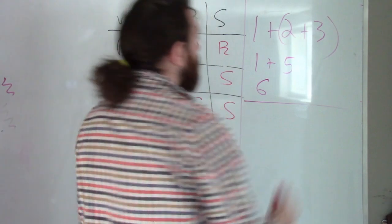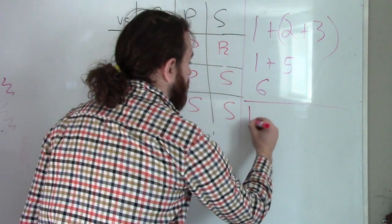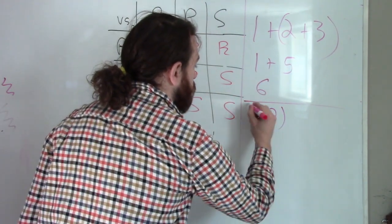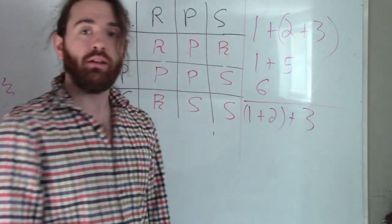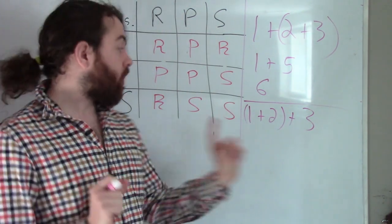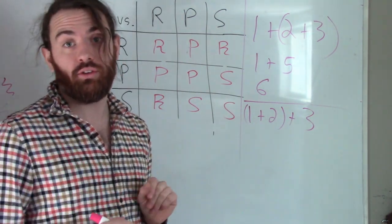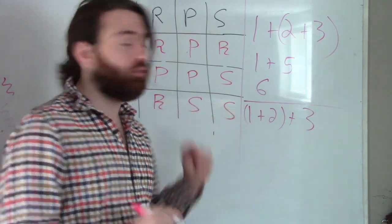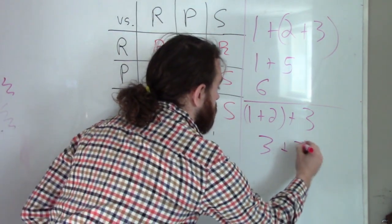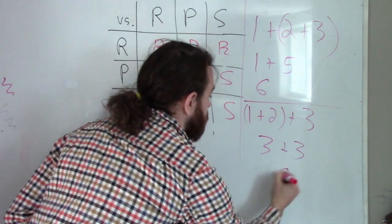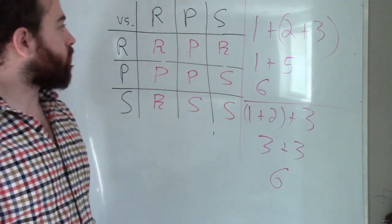Now if I change the order of these brackets, I get one plus two plus three. So let's suppose I did one plus two first this time. So I would get one plus two is equal to three. So I'm left with three plus three and three plus three is six. So these two answers agree.